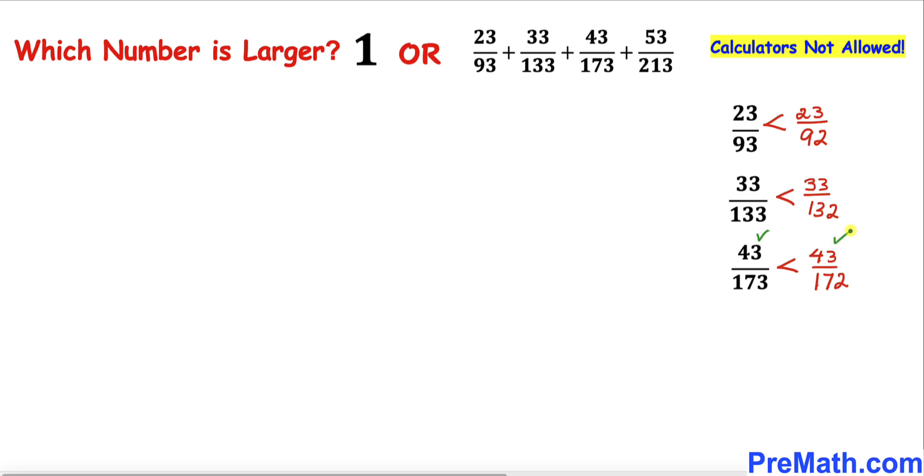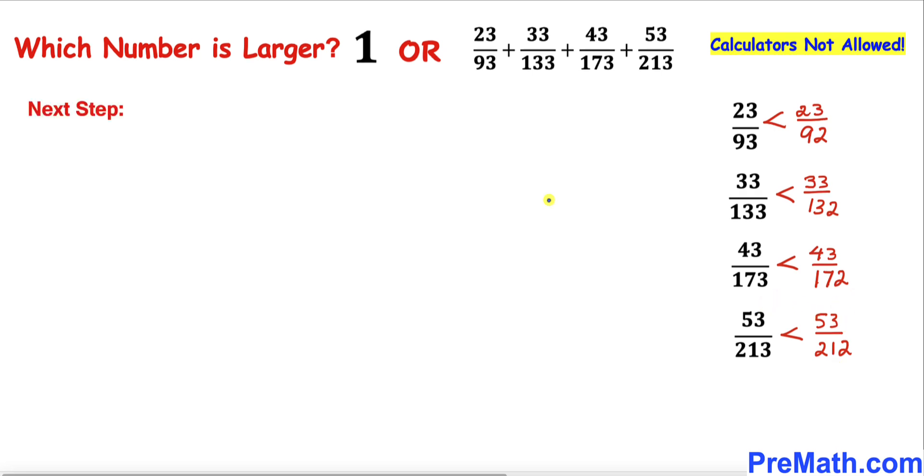Finally, let's focus on this fraction. Likewise, 53/212 is going to be smaller than 53/213. Here's our next step: let's add all these fractions on the left-hand side.